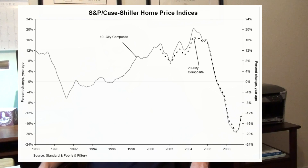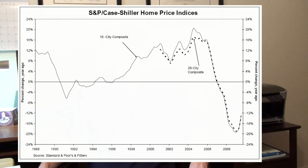In theory, non-payments should have been absorbed by the lower tranches with poor debt ratings. However, defaults became so widespread that collateralized debt obligation issuers could not make payments for mezzanine or senior secured tranches. The CDO market collapsed along with the value of mortgage-backed securities.